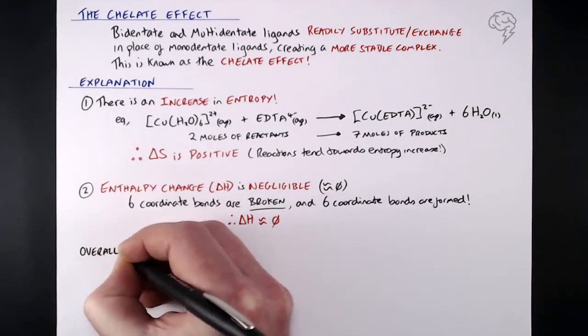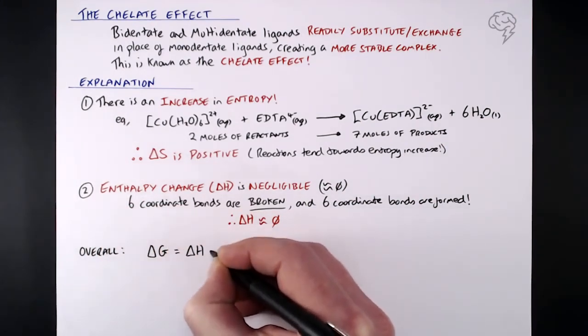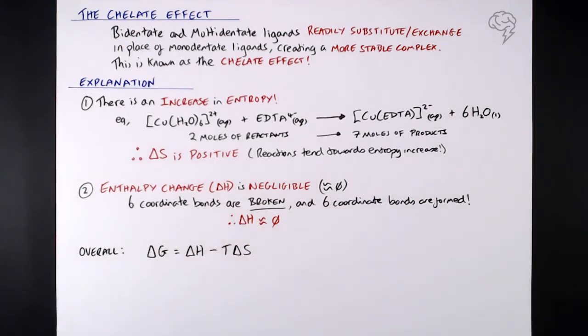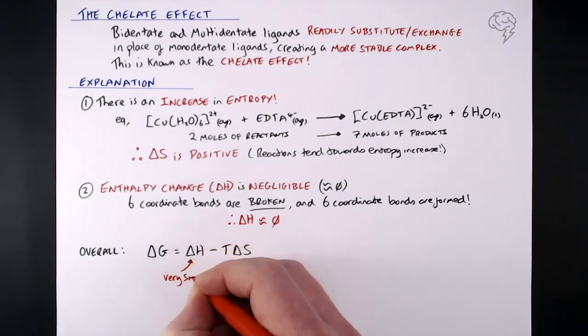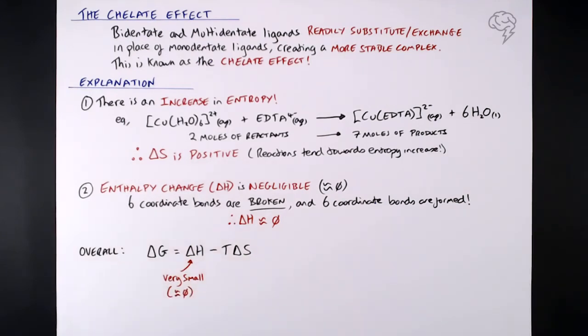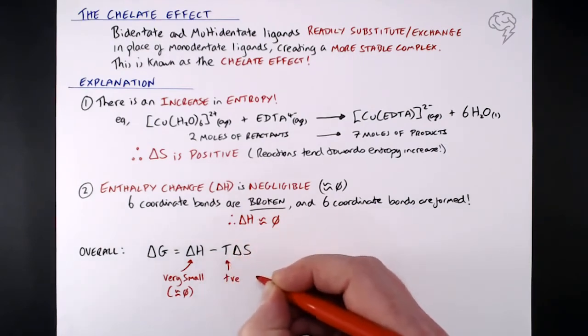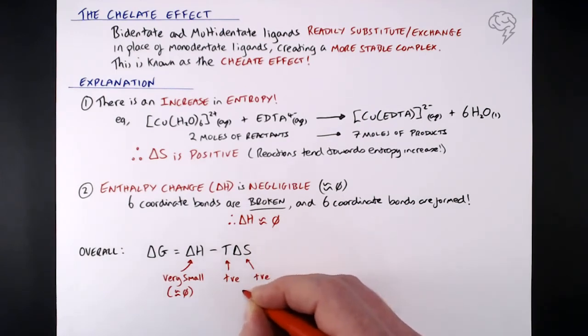Overall, what we've got is the change in Gibbs free energy equals delta H minus T delta S. Now, of course, if we want this reaction to be feasible, which of course it is feasible, delta G has got to be below zero. Now, delta G tends to be below zero for all of these exchanges, from a bidentate and multidentate ligand changing or swapping out for those individual monodentate ones. So the reason here, and a reminder, well, if delta H is really small, it's about zero. It's neither here nor there. It might be slightly positive overall. It might be slightly negative overall, but generally speaking, it's going to be a really small number.